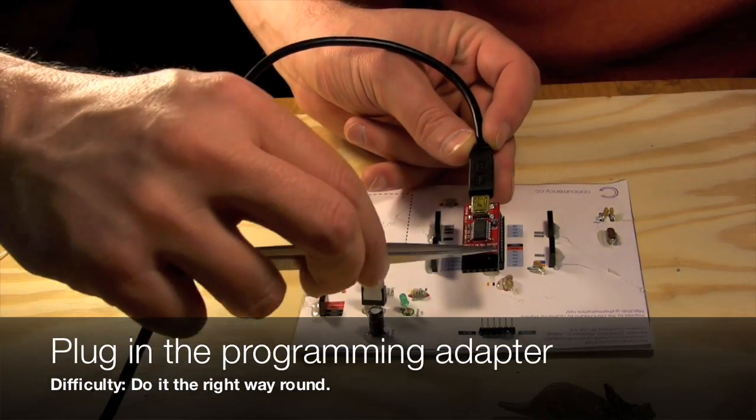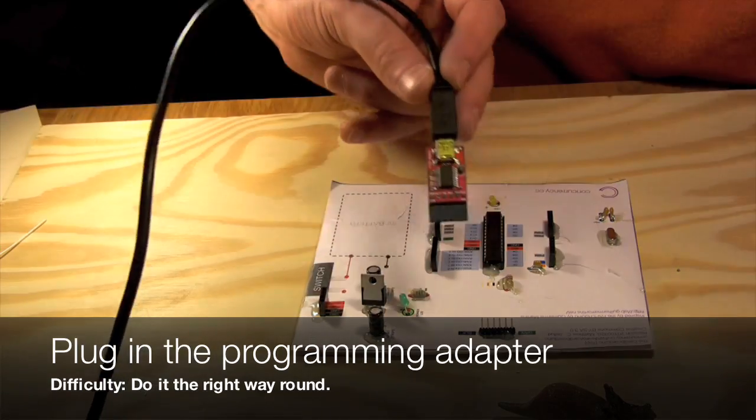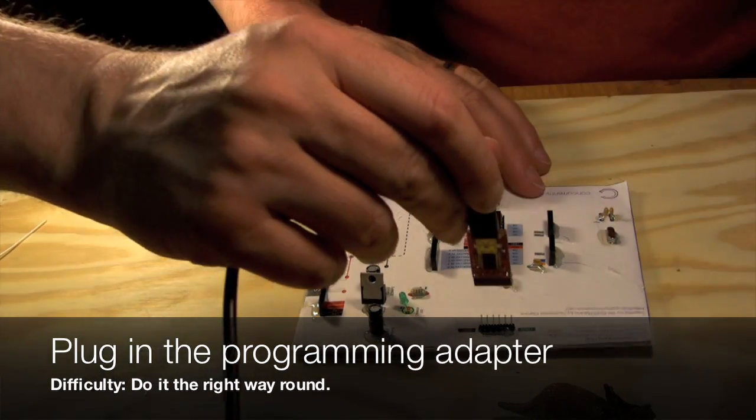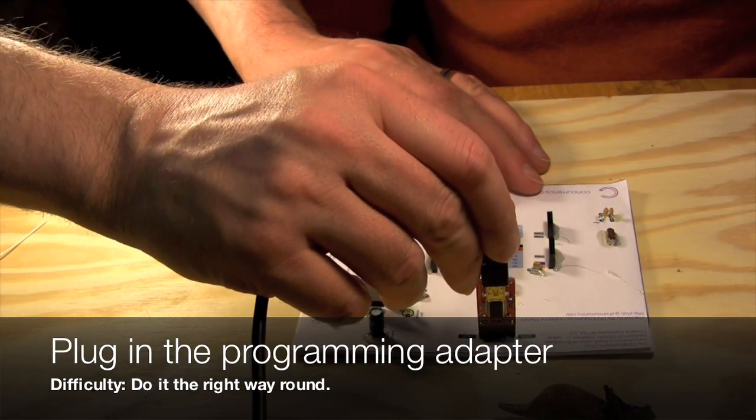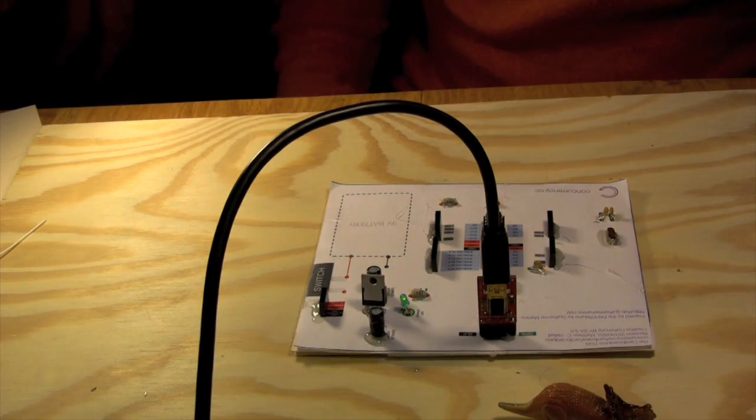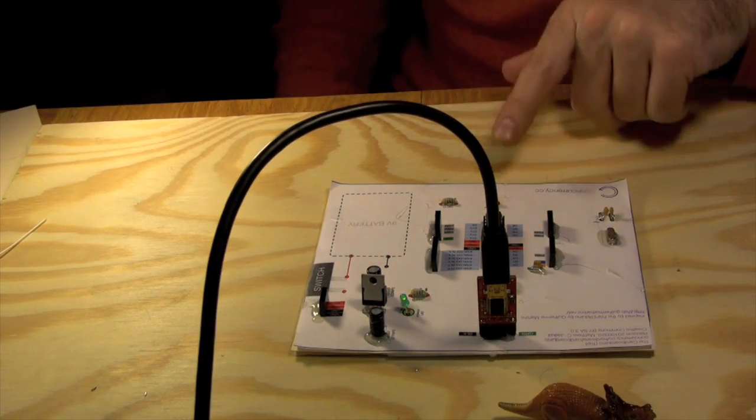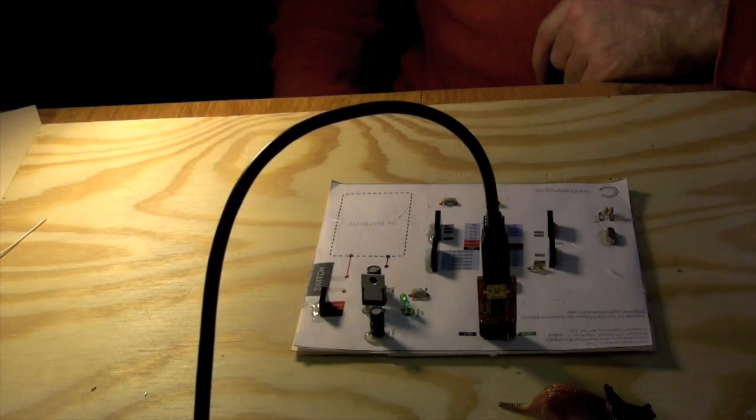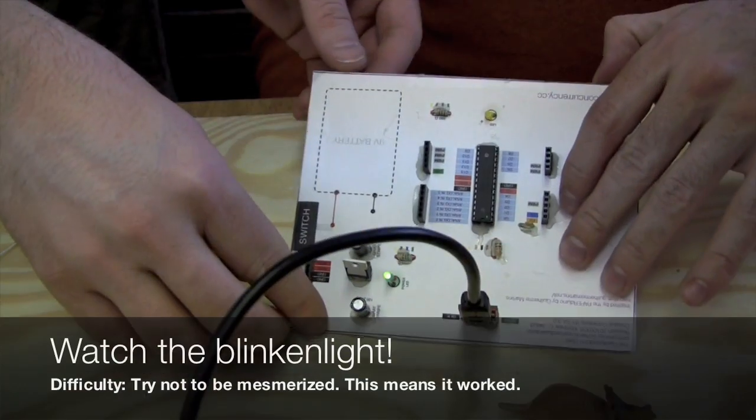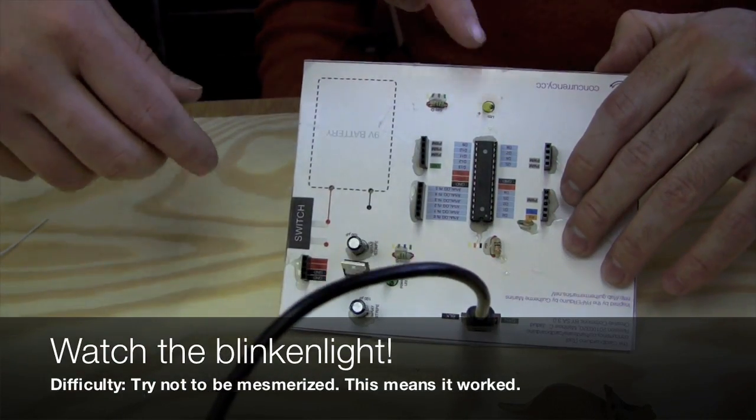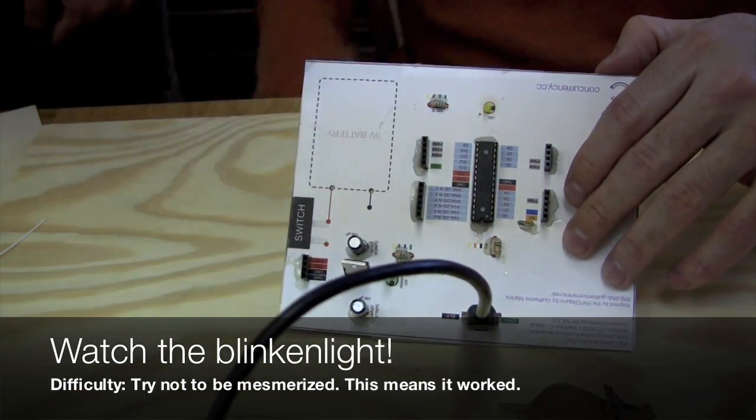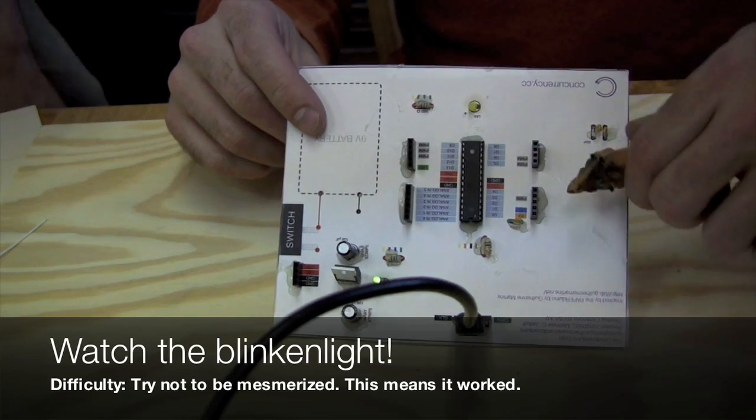Now we test. We take the programming adapter, line up black and green, it's written on the adapter, and if all goes well, we'll see a green power light up on top of our board, or the bottom in this picture, and we'll see a blinking yellow light, our heartbeat, that tells us that everything is going well. Congratulations! You've built your first computer.